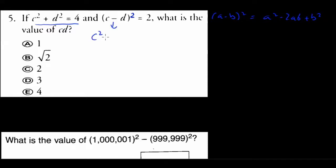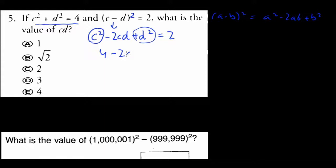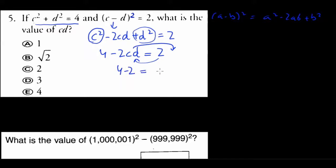Expanding (c - d) squared gives c squared minus 2cd plus d squared, and that equals 2. The question tells us c squared plus d squared is 4, so substituting: 4 minus 2cd equals 2. Rearranging: 4 minus 2 equals 2cd, so 2 equals 2cd, meaning cd equals 1.